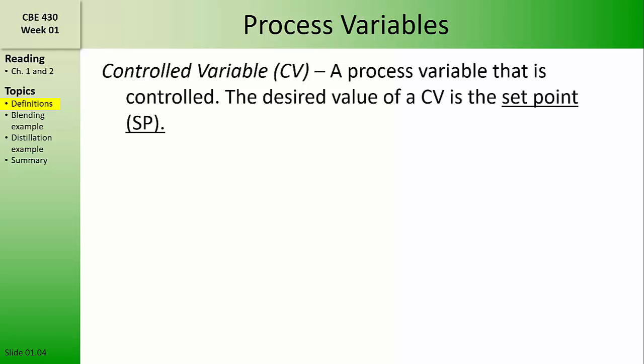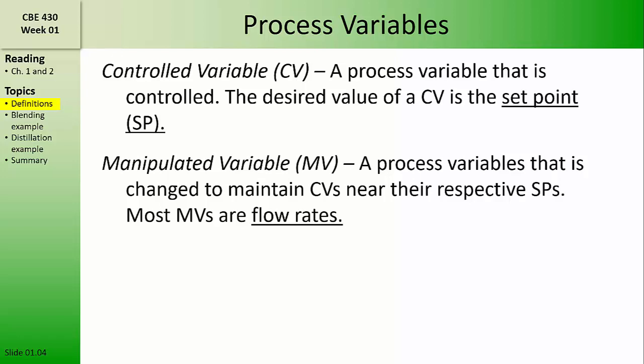a desired value of that controlled variable that's the target for the process control system to maintain the controlled variable at. A manipulated variable, on the other hand, is a process variable that is changed to maintain controlled variables at their respective setpoints. The vast majority of manipulated variables are flow rates. They can be feed flow rates, they can be effluent flow rates, and often they're utility stream flow rates, such as heating steam or cooling water.